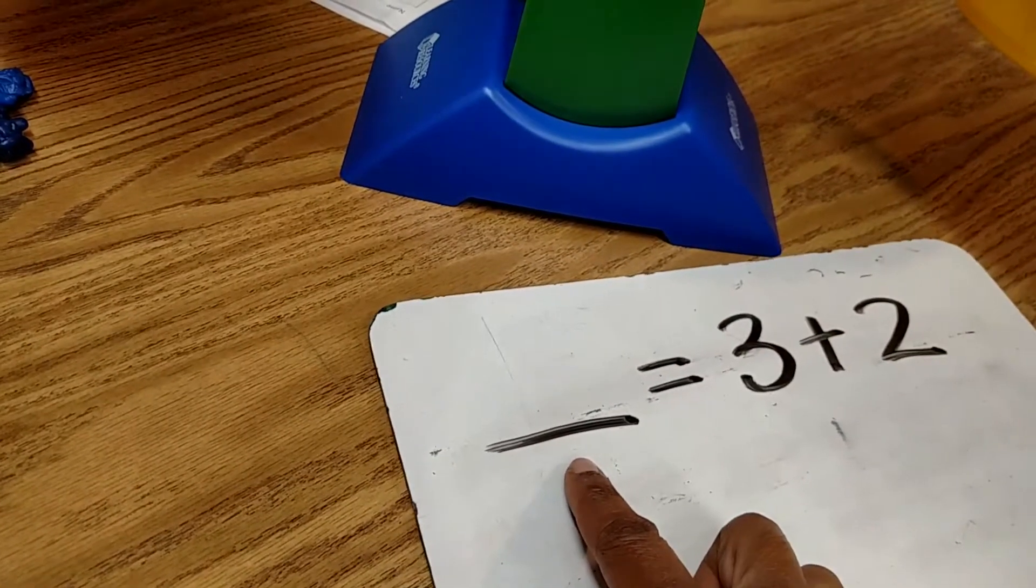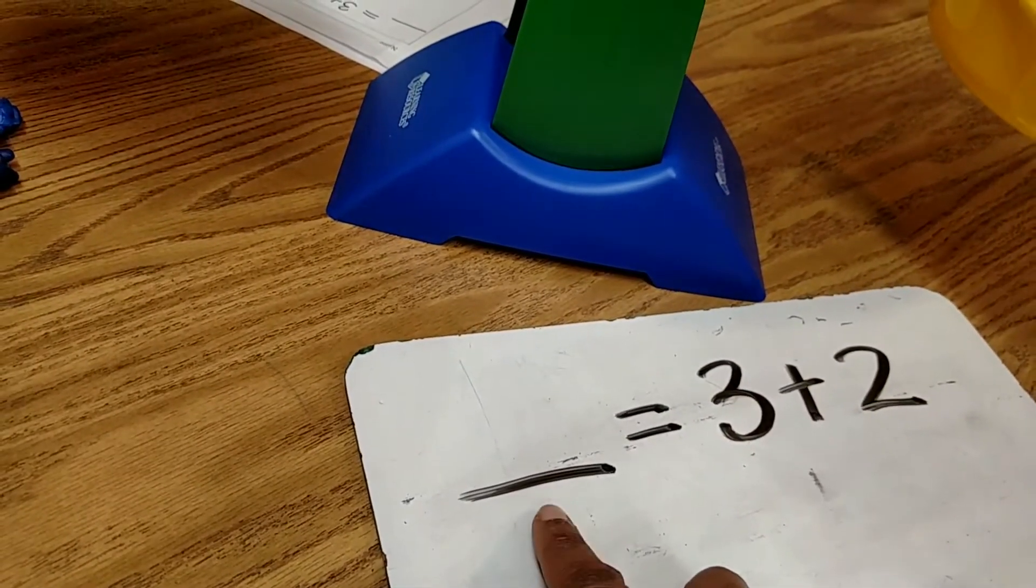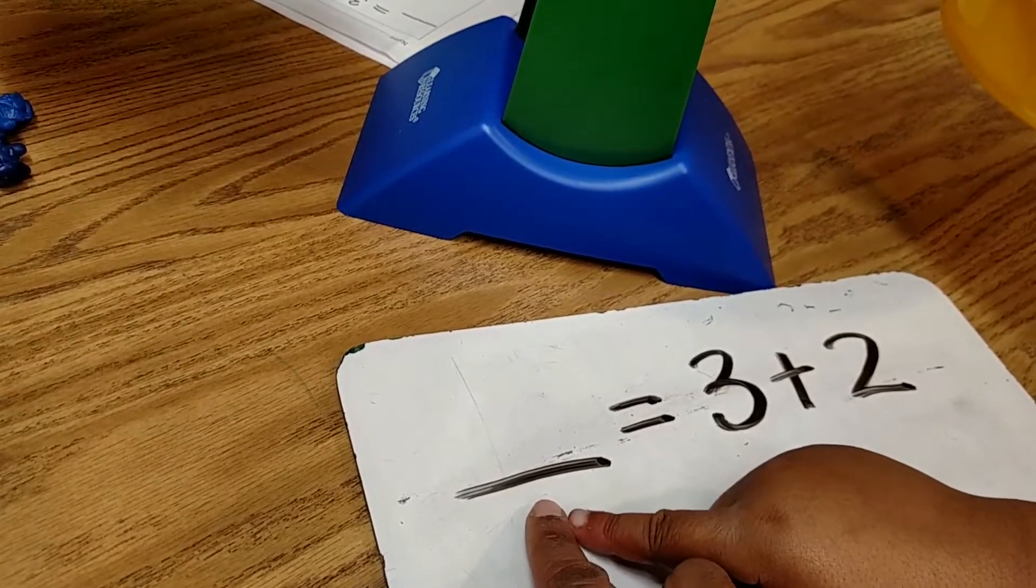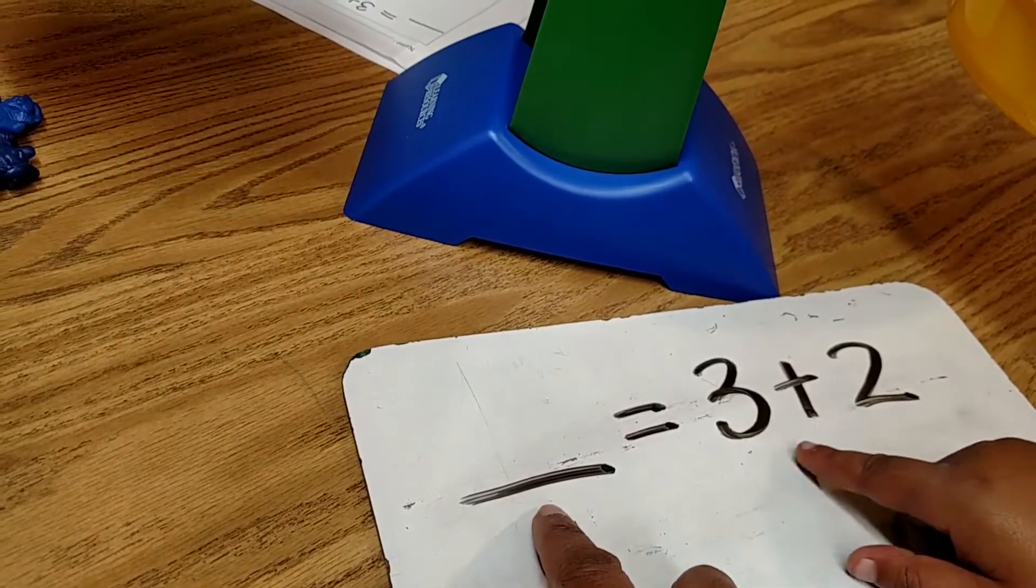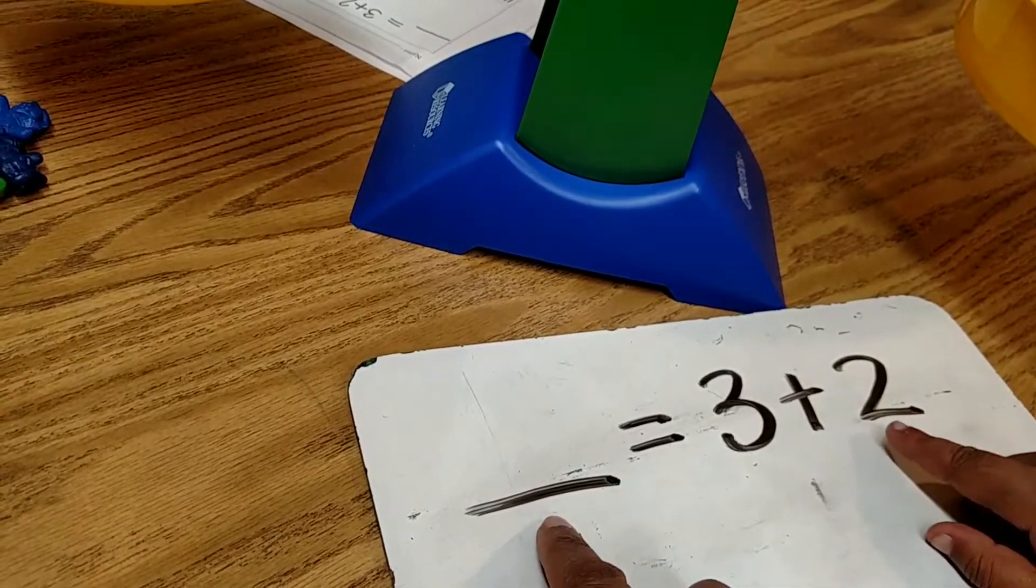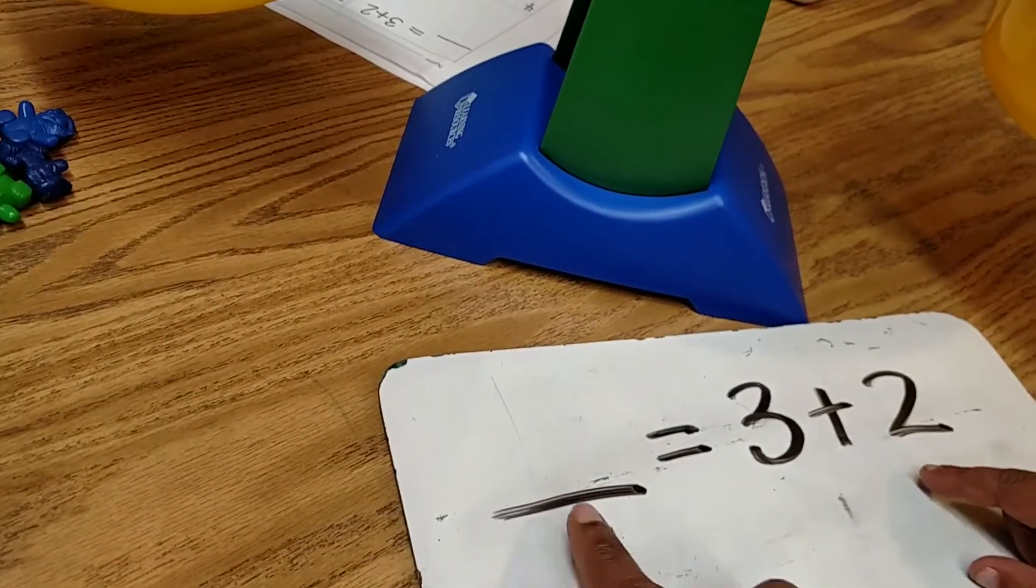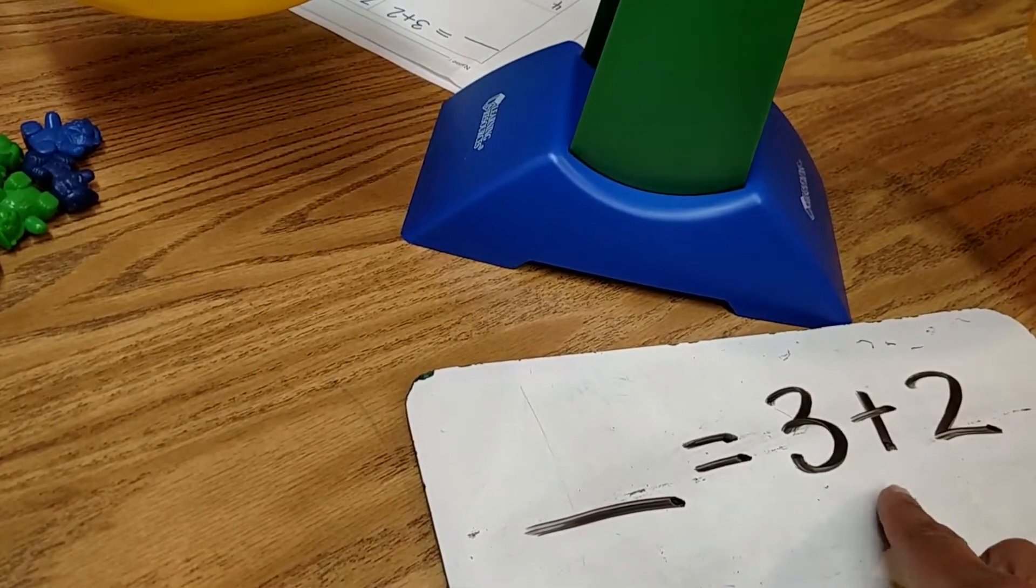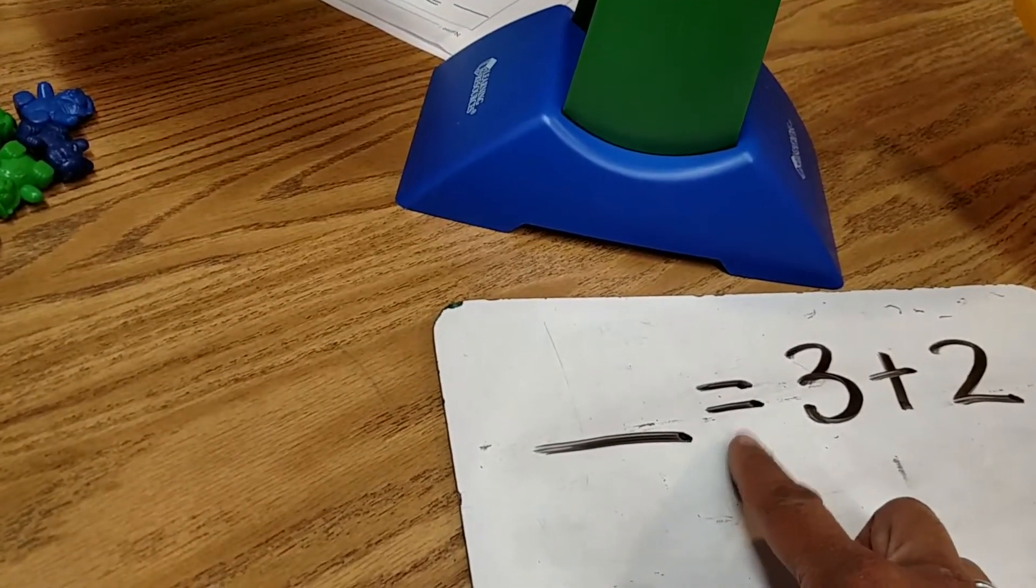What does that say? It says 2 plus 1. No, start here where my finger is. 0 minus 3 equal plus 2. Oh, so this would be blank is the same as 3 plus 2. That's an equal sign.